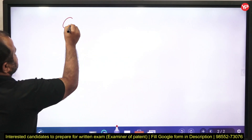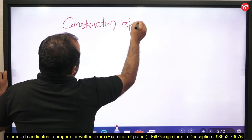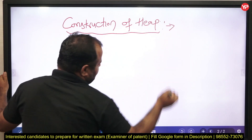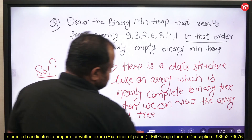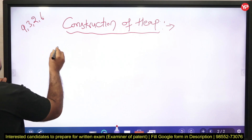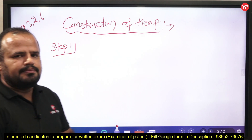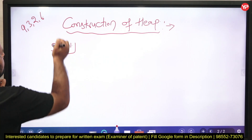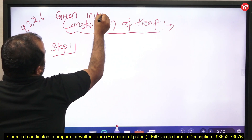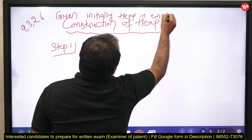Now, construction of heap. Heap is a data structure like an array which is a nearly complete binary tree, where we can view the array as a tree. How you can start the construction of heap? First, you have to write: given, initially heap is empty.